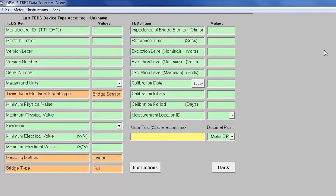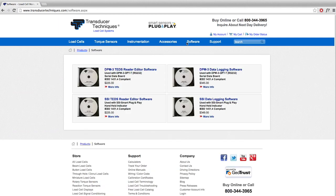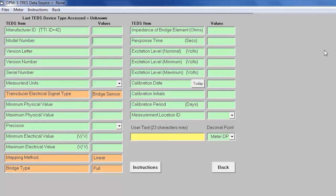I would also like to show you our TEDS Reader Editor software that can be purchased from our website at transducertechniques.com. This software allows you to read the parameters from the EEPROM and populate the IEEE 1451.4 template 33 from any of the three instruments demonstrated in this video.